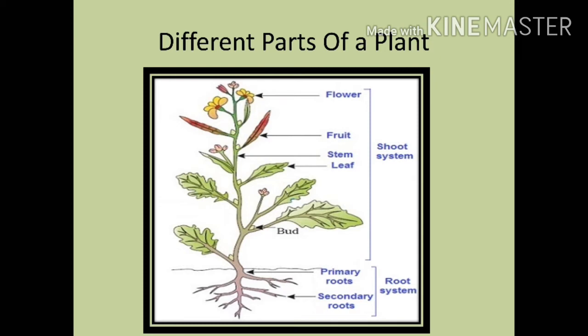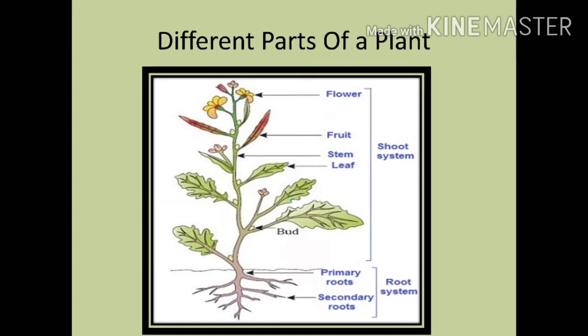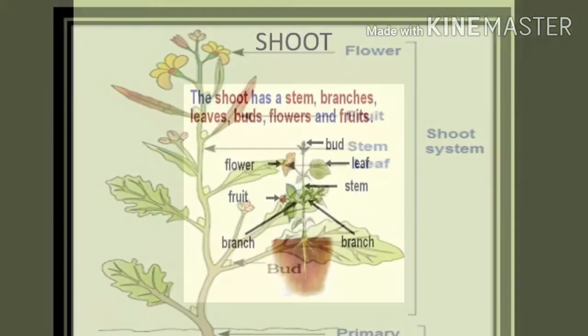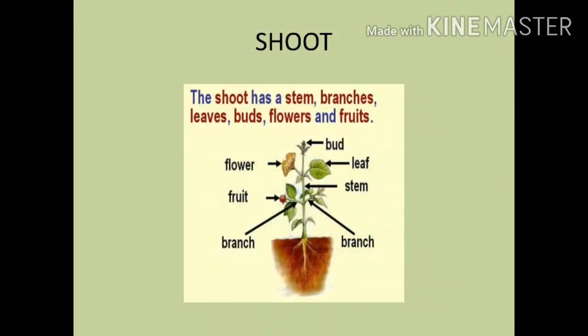The parts of the plant that lie above the ground is the shoot system, and the parts that lie below is the root. The shoot has a stem, branches, leaves, buds, flowers and fruits.